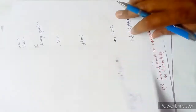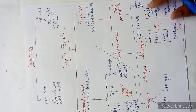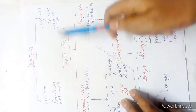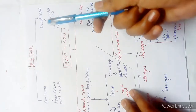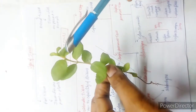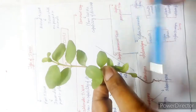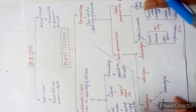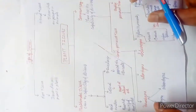Coming to the next topic — types of tissue. On the basis of where they are present, tissues are of two types: plant tissue and animal tissue. Tissues which are present in plants are known as plant tissues, and tissues present in animals are known as animal tissues.